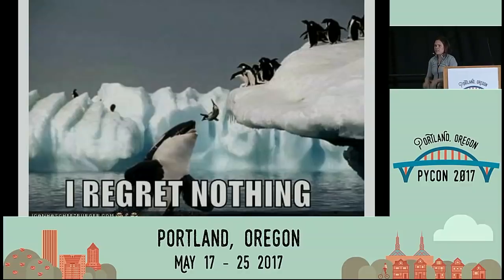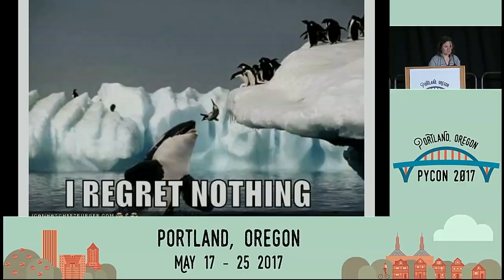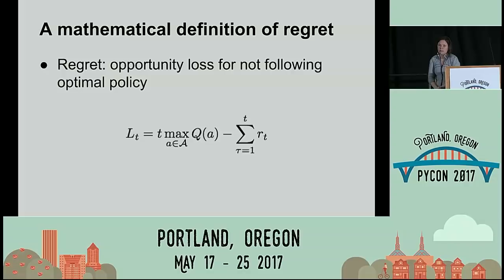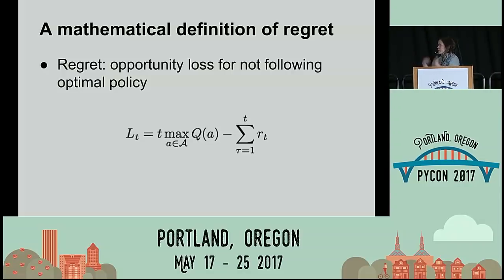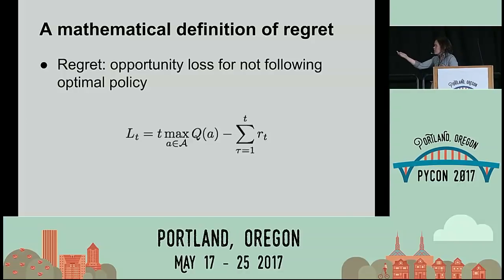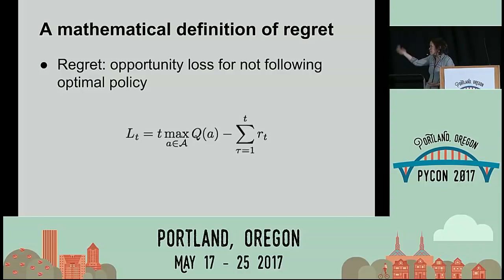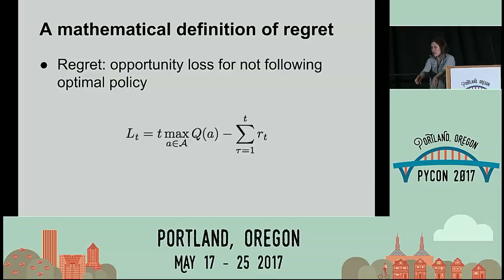To understand what a bandit problem is, we have this notion of regret. Regret basically is the opportunity cost — the loss for not following our optimal policy. So for every time we've played with the bandits, we have this value function Q, and the sum of the rewards. It's the number of times we've played the game times the average expected value of the best option, minus the rewards that we've received so far.